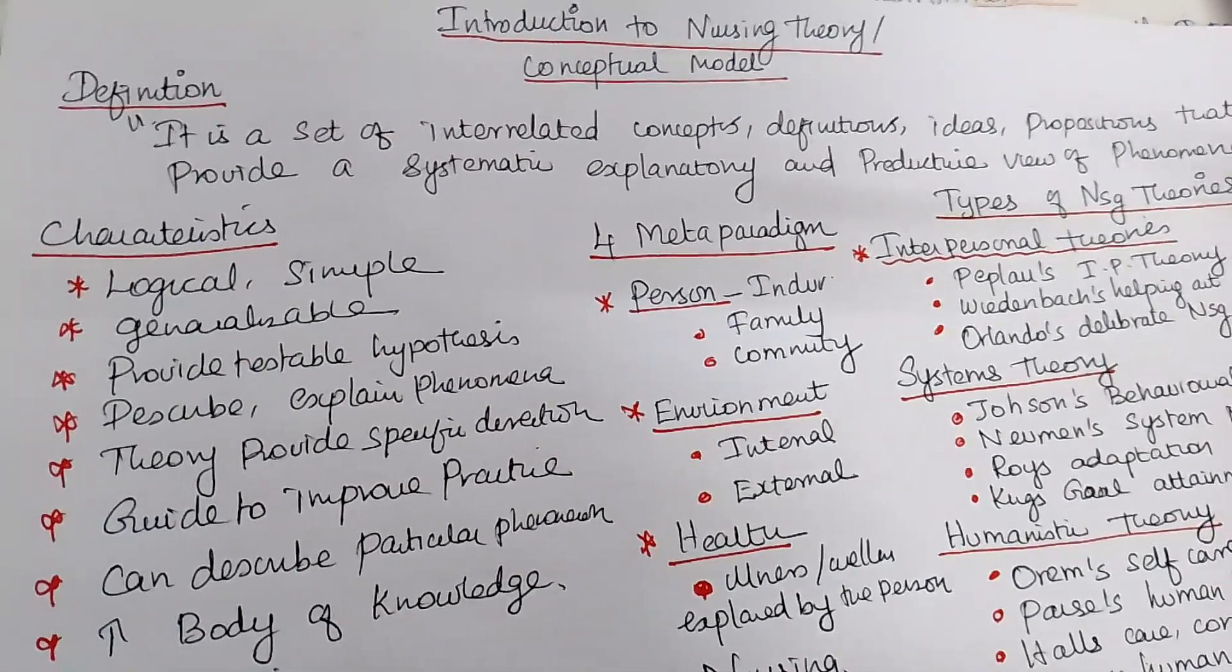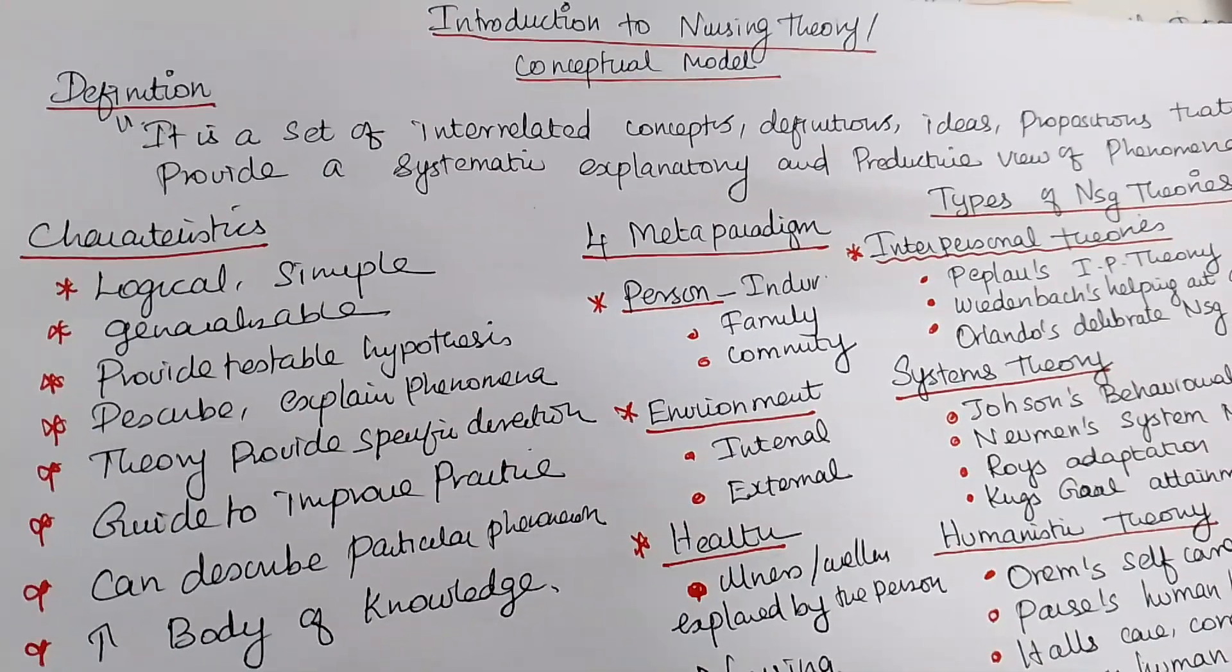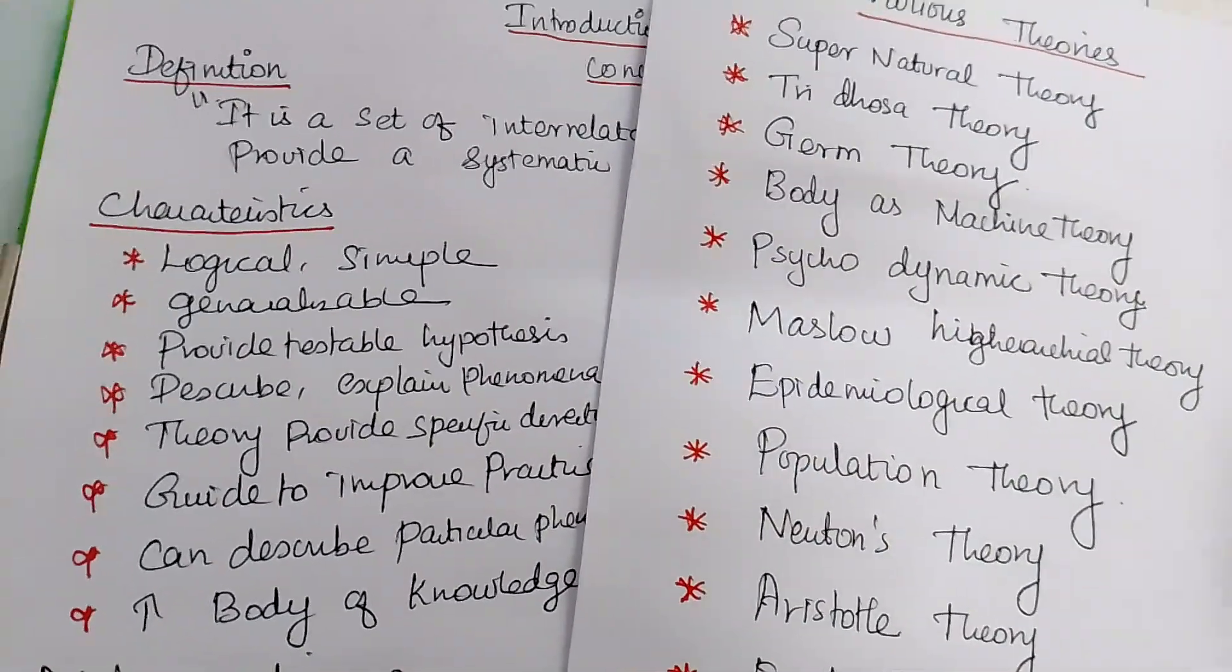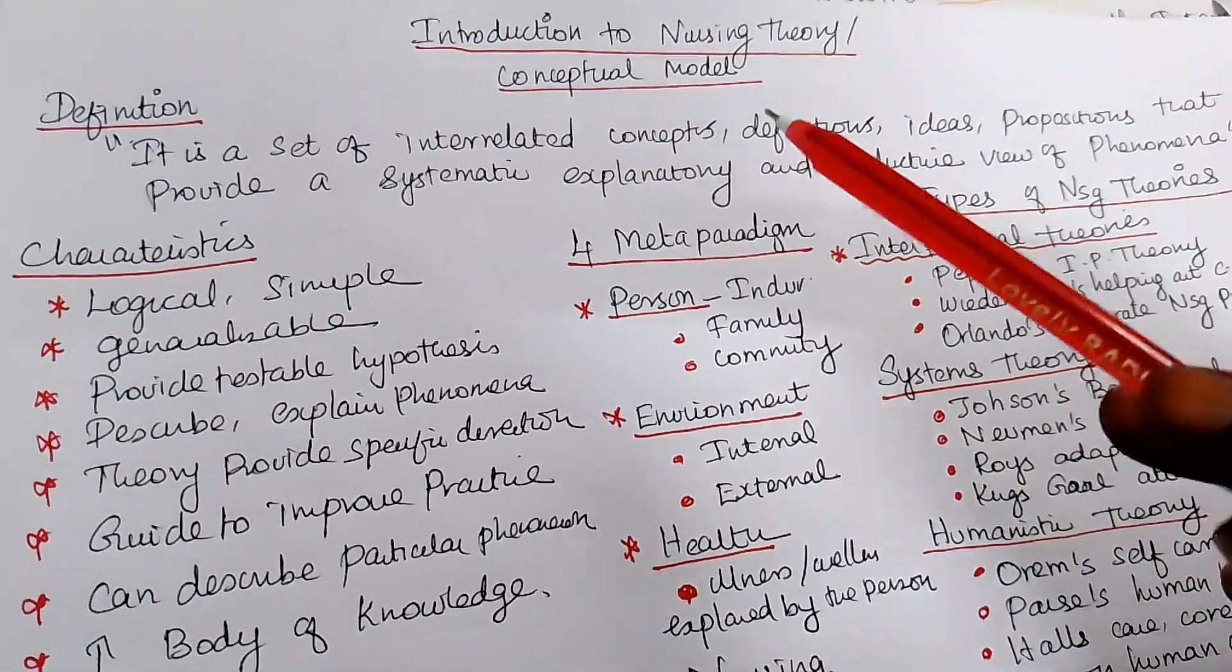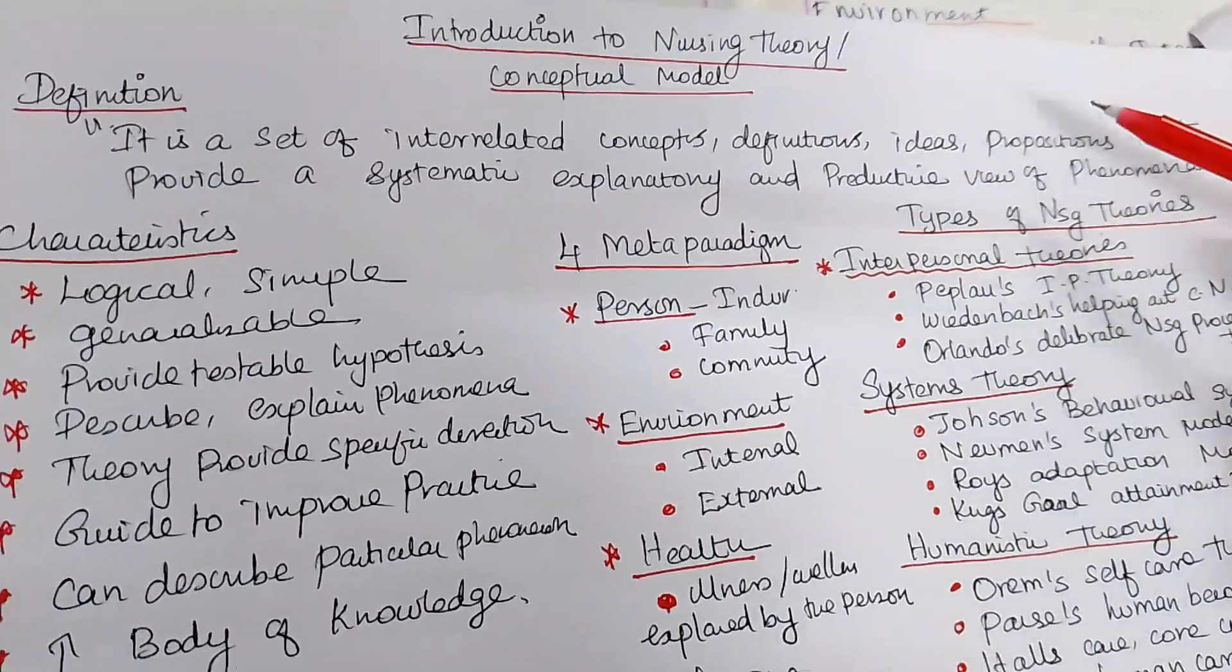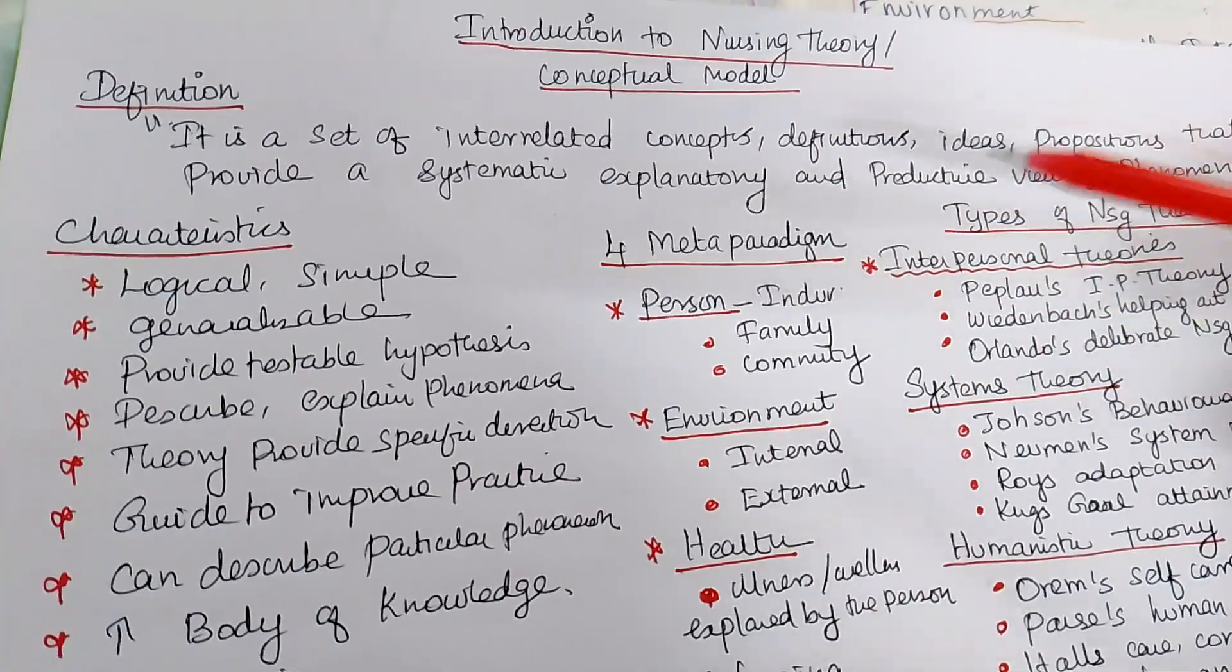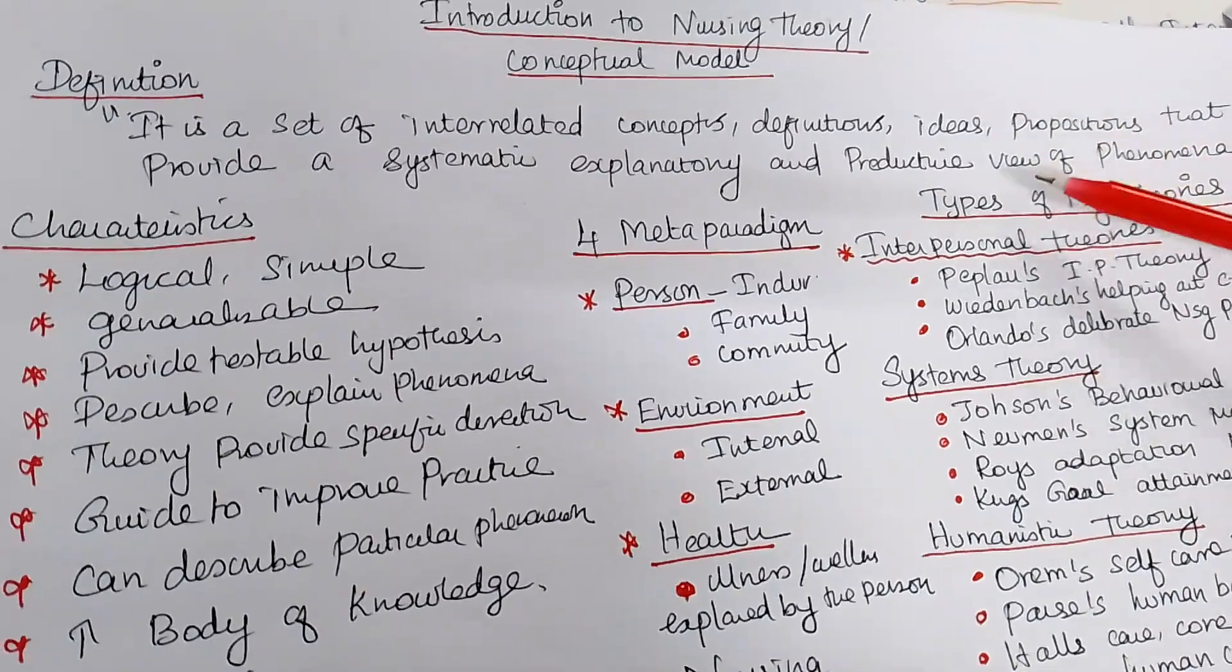So before we go to the nursing theory, we will see many theories. Some generally what is called a theory we will see. Actually the definition, if you see, a theory or the conceptual theory, it is a set of interrelated concepts, definitions, ideas, propositions that provide a systematic view, systematic explanatory and predictive view of a phenomena. It is a theory.